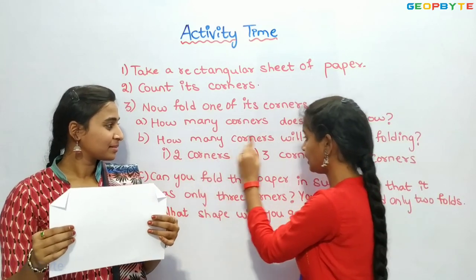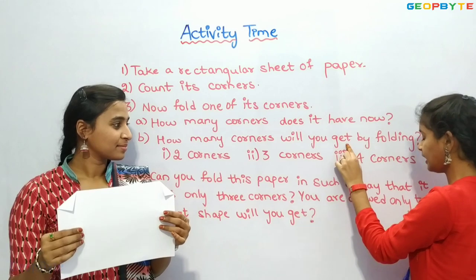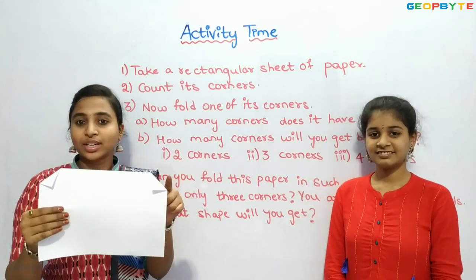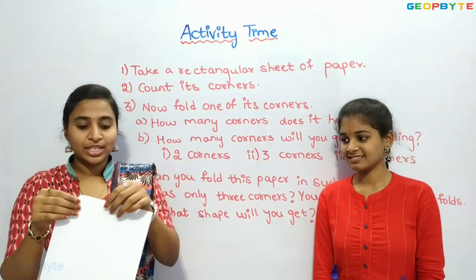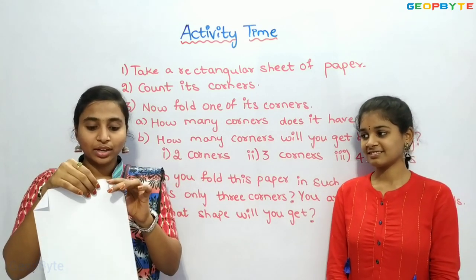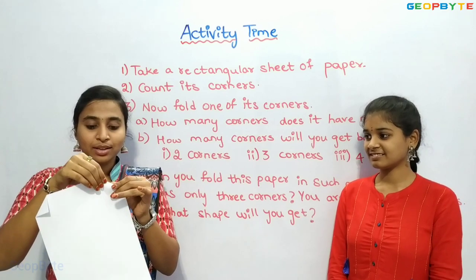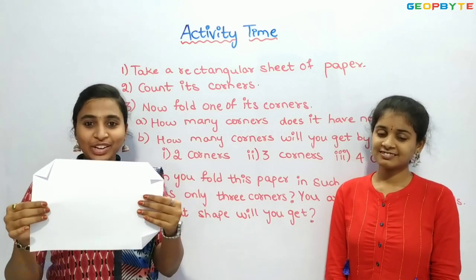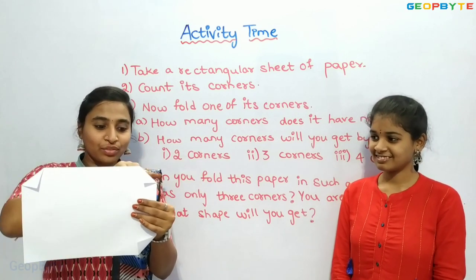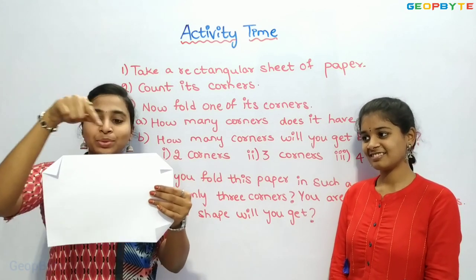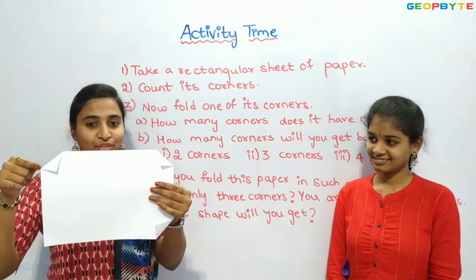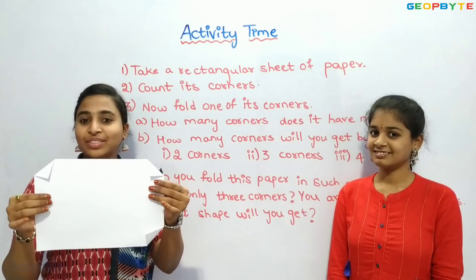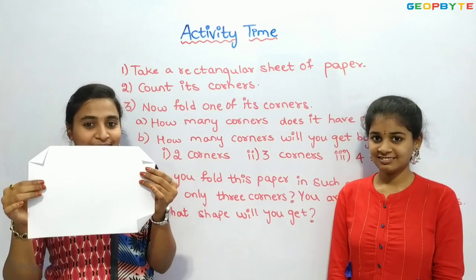How many corners will you get by folding three corners? Already two corners are folded. Let us fold the third corner. Now we will count how many corners there are — one, two, three, four, five, six, seven. We have seven corners now.